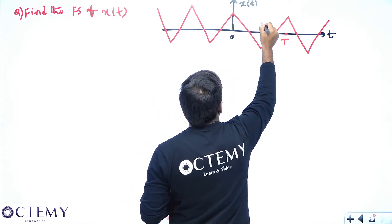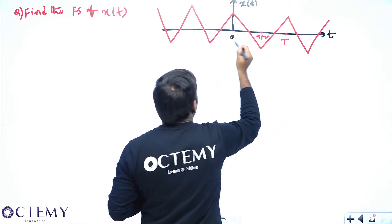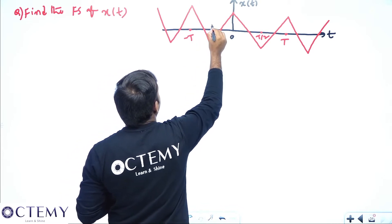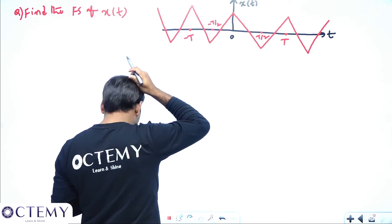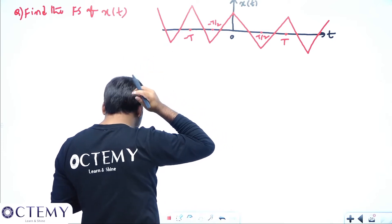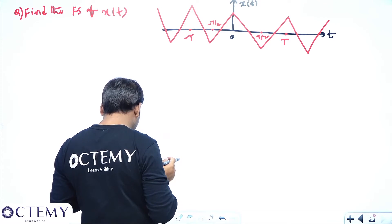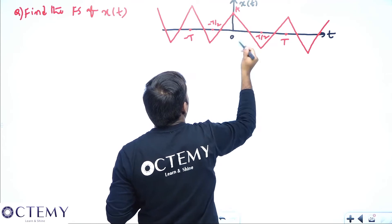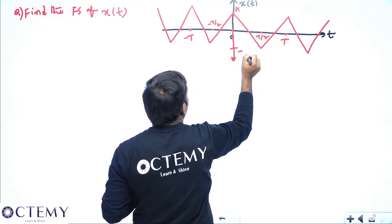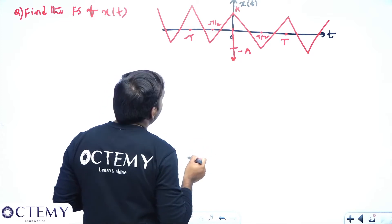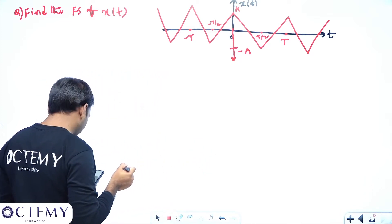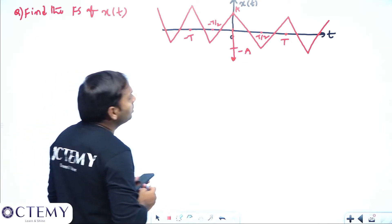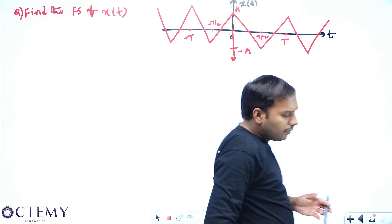The period is T, so we have T/2 marked, and this will be -T whereas this is -T/2. The amplitude value goes from +a to -a. So this is the question x(t) that has been given, and you have to solve this problem using the concepts of Fourier series.